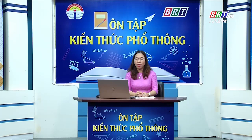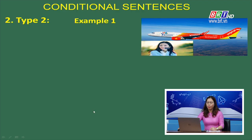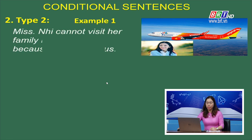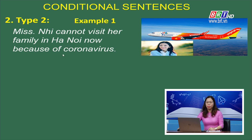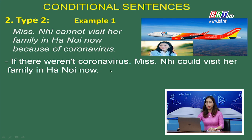Cô và các em vừa ôn tập xong câu điều kiện loại 1. Vậy điều kiện loại 2 có gì khác biệt? Let's come to conditional sentences type 2. Cô có tình huống: Miss Nhi cannot visit her family in Hà Nội now because of coronavirus. Đây là tình huống thật về cô Nhi. Với tình huống thật này, cô sẽ có câu điều kiện: If there weren't coronavirus, Miss Nhi could visit her family in Hà Nội now — điều kiện này trái ngược với thực tế ở hiện tại, điều kiện không có thật ở hiện tại, chính là câu điều kiện loại 2.